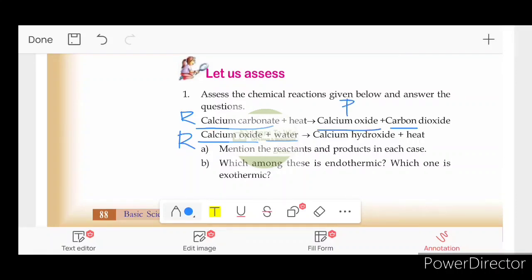Products. Calcium oxide and carbon dioxide. The products in the second reaction, calcium hydroxide. Which among the following is endothermic? Which one is exothermic? What is endothermic? What is endothermic?